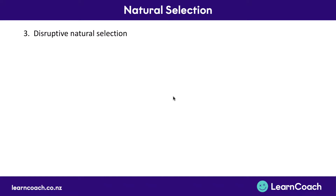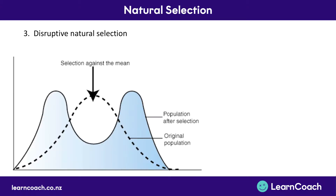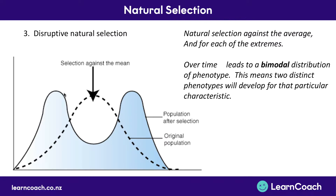The third type is disruptive natural selection — the opposite of stabilizing. You start with natural variation, but either being shorter or taller helps you thrive, while being in the middle is the worst of both worlds. Over time this leads to a bimodal distribution, meaning more shorter and more taller people but far fewer of average height — two distinct phenotypes developing for the same characteristic, possibly occupying different environments like forests and deserts.